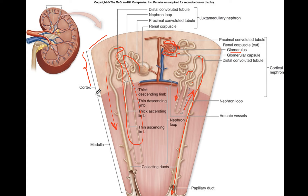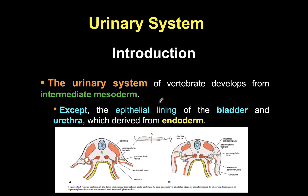From outside, the kidney has a capsule; inside is the cortex, and the middle region has a pyramidal shape called the medullary pyramids. Together with adjacent cortical areas, these structures form the renal lobes.